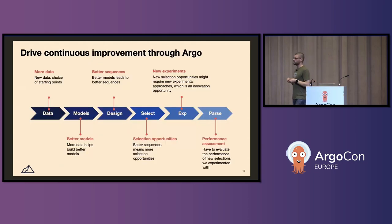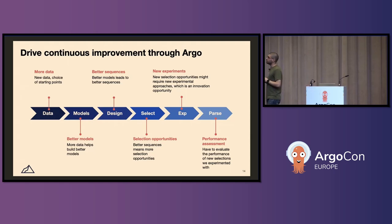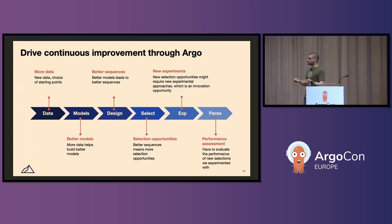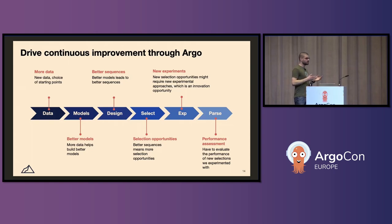If you're the type of organization that has a similar operational workflow — where you start with something, feed it through multiple steps, and use the final output back into your initial step to keep improving — Argo is actually very empowering for that type of pattern. In Dyno's case, we start with data collection, build some models, then design some sequences, select among them, perform some experiments, and parse the data to construct performance evaluations. But that means we now have more data, which means we can build better models, design better sequences, have more selection opportunities, and we keep going in this loop until we meet whatever goals we've set for a specific research program. So if you have similar workflows — not necessarily in gene therapy — you can take advantage of Argo workflows to model this specific business domain.